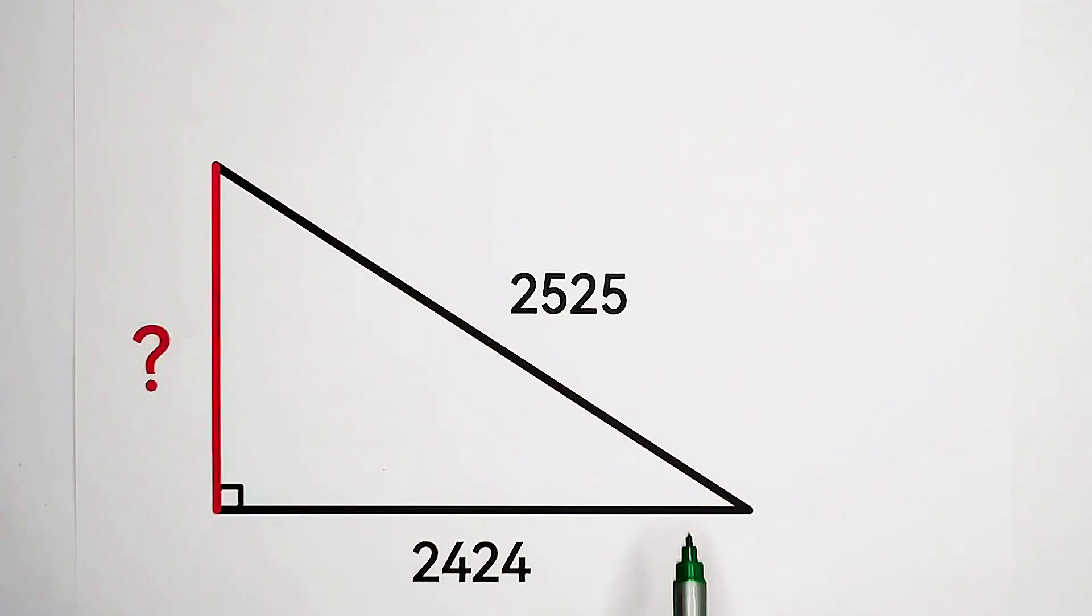Because this is a right triangle, what can we do? According to the powerful theorem, the Pythagorean theorem, the most powerful theorem in geometry.